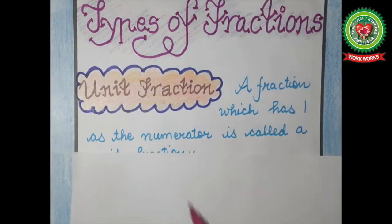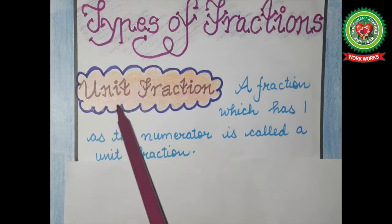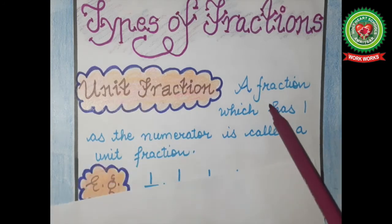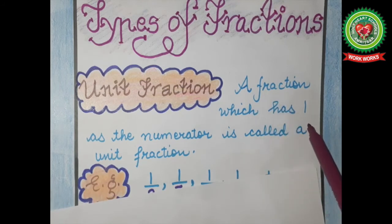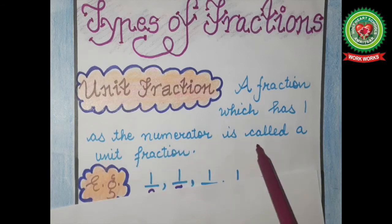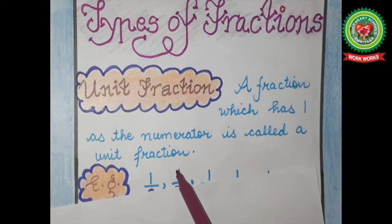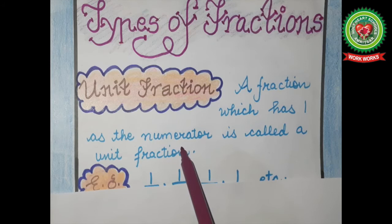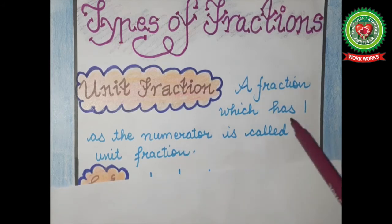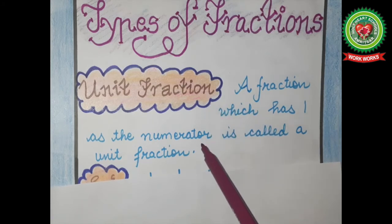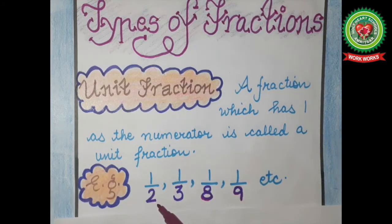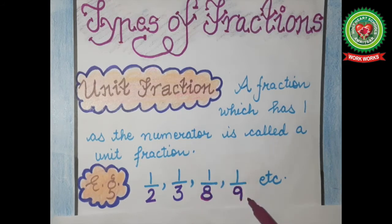Number one is unit fraction. As its name depicts, unit meaning one. The definition of unit fraction is: a fraction which has one as the numerator is called a unit fraction. Numerator meaning the number above the line, or the upper number. For example: one upon two, one upon three, one upon eight, one upon nine, etc.